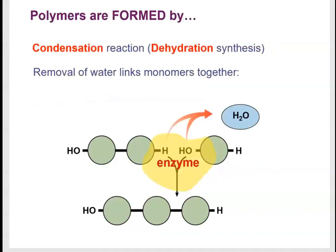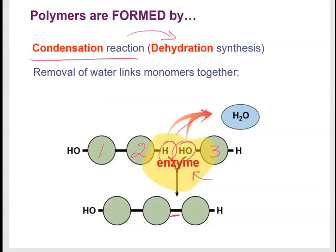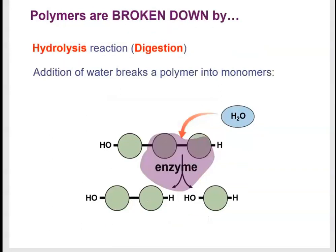Polymers are formed through a condensation reaction, also called dehydration synthesis. If we have a shorter polymer — unit one, unit two — and we want to add monomer three, functional groups come together and react with the help of an enzyme. When the functional groups react, water is formed and removed, and this is how the covalent bond forms between units.